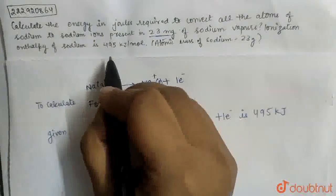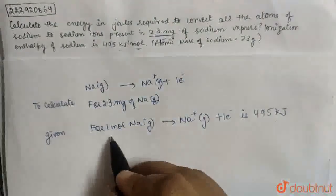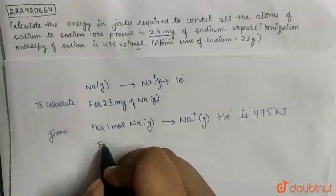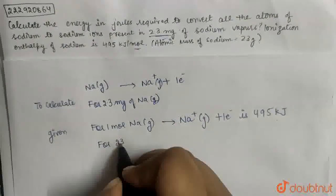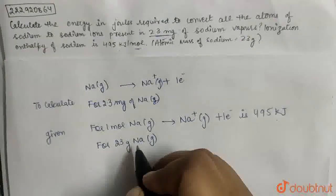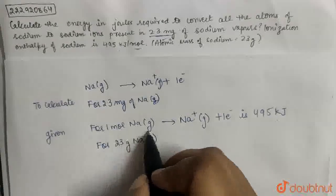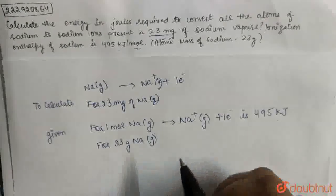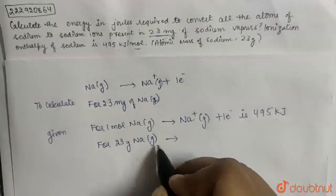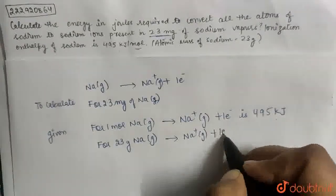See, here given that 495 kJ used for 1 mole. So I can write for 1 mole, that for 23 grams of sodium vapors. Because 1 mole of sodium vapors is sodium. So I can write for 23 grams of Na to convert into Na positive gas plus 1 electron.